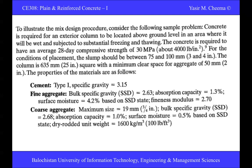The column dimensions: it is a 635 mm square column — all sides are 635 mm — with a minimum clear space for aggregate of 50 mm. This clear space means the space between the formwork and the reinforcement bar inside.